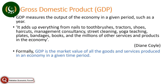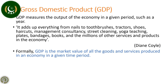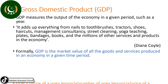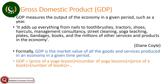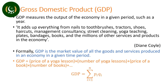As you know, we cannot add the number of cars with the number of chairs with the number of teaching services produced with the quantity of haircuts. Therefore, we convert all the goods and services into numeric values by multiplying them with their prices and then add up to get a number for GDP. For example, GDP is the price of a yoga lesson multiplied by the number of yoga lessons, plus the price of a book multiplied by the number of books produced, and so on. Therefore, GDP is the sum of price multiplied by quantity of each commodity produced in an economy during the given time period.